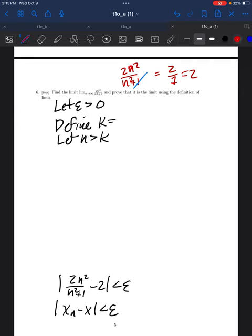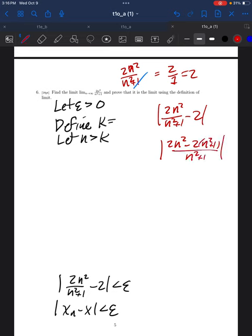And then, in my scratch paper, I'm going to take 2n squared over n squared plus 1 minus 2. I'm going to combine those terms, 2n squared minus 2 times n squared plus 1 over n squared plus 1. This becomes 2n squared minus 2n squared minus 2 over n squared plus 1, which becomes minus 2 over n squared plus 1, which is 2 over n squared plus 1.